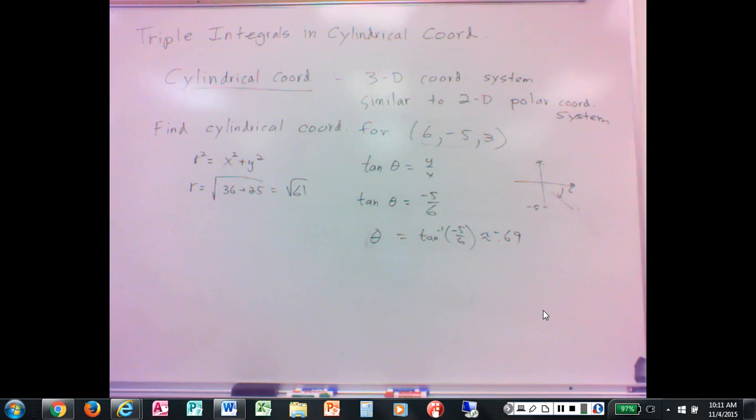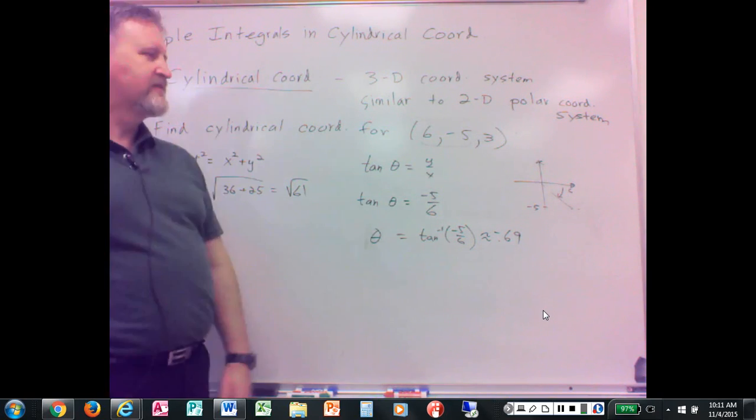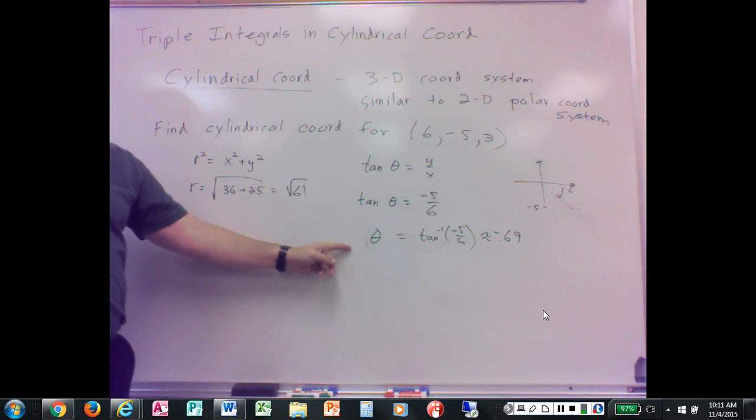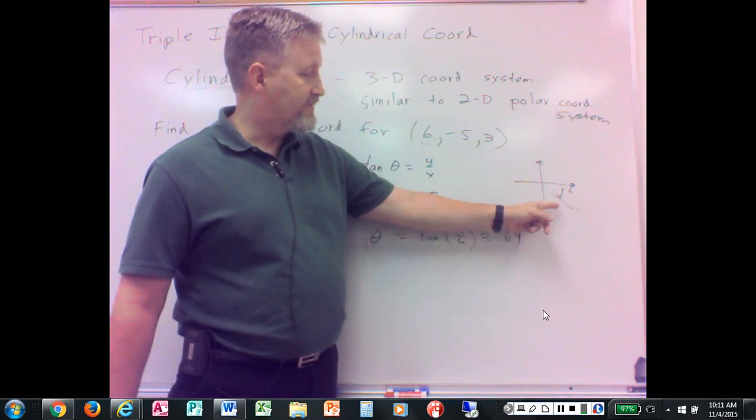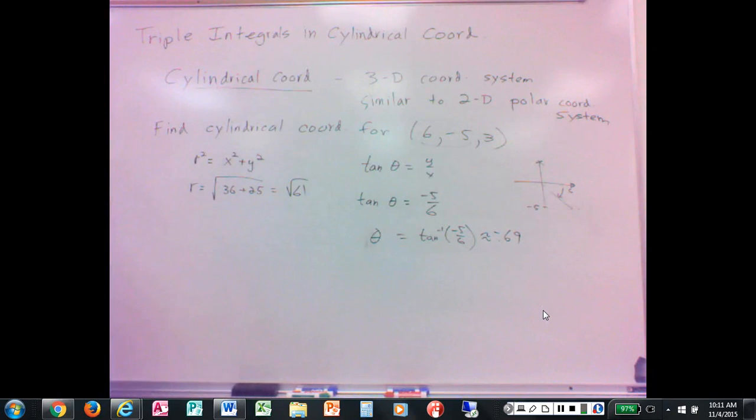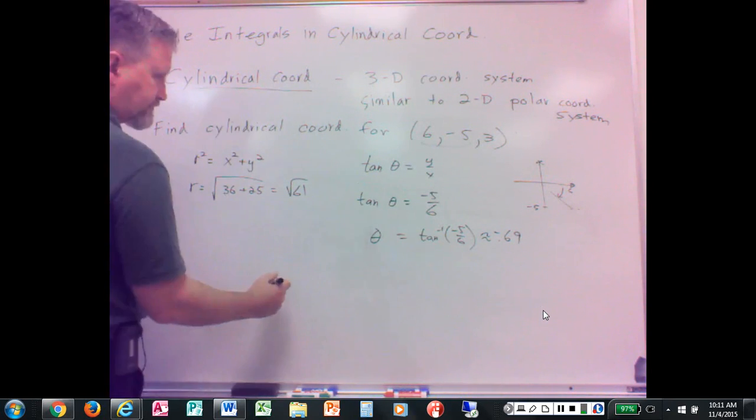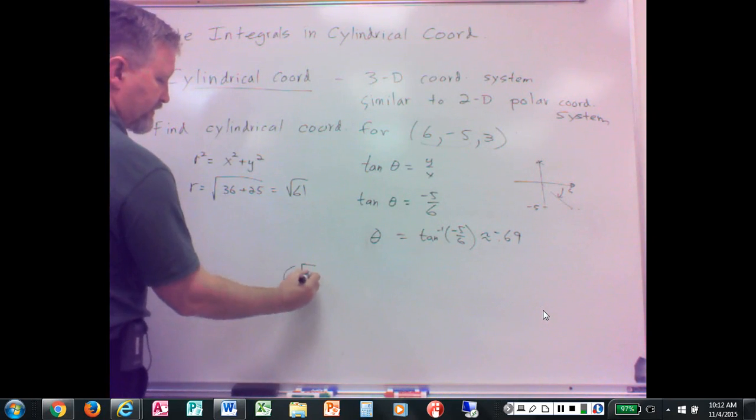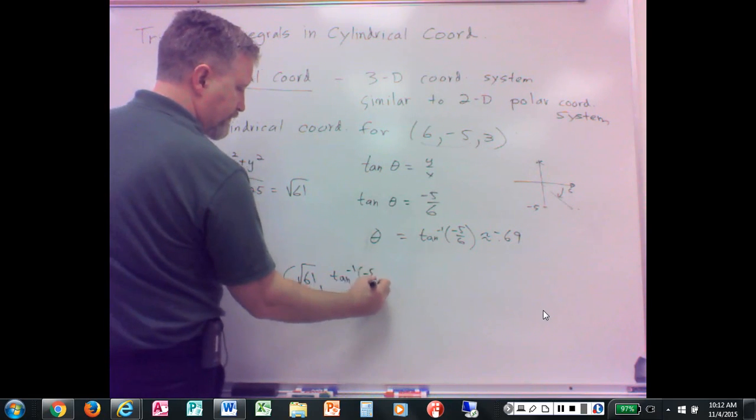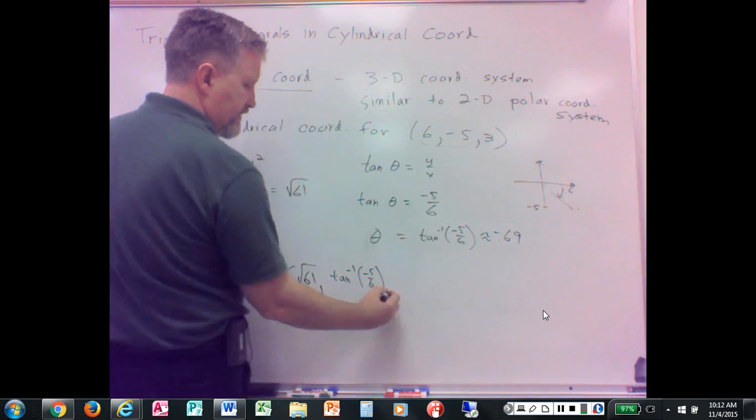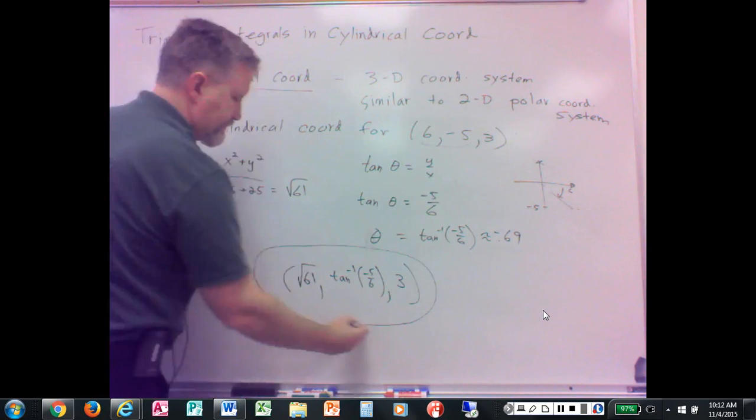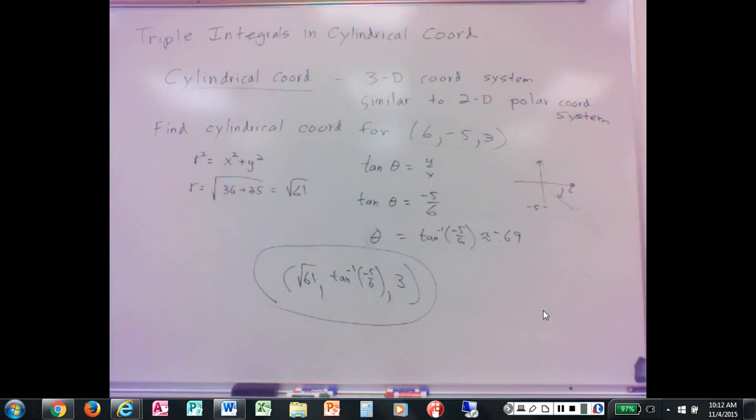All right. Now, the other point to this is that's only one possibility for theta. What else could we do? Well, we could do that angle plus two pi, right? We could go around, so add two pi or subtract two pi. So there's infinitely many possibilities for theta. We just pick one, I guess. And so then our cylindrical coordinates would be r square root of 61, theta, which if you write the exact value would be tangent inverse negative five over six in approximate radians. And then z is z, so three. Something like that.